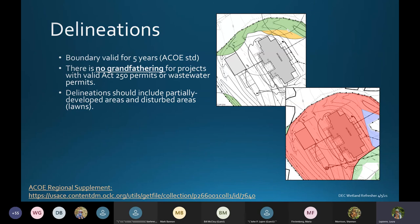Delineations should also include partially developed areas and disturbed areas, including lawns. Here's an example of a site where the disturbed area wasn't delineated. In the second shot, the wetland had expanded over time and was completely within the area where a building was proposed.